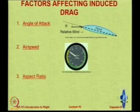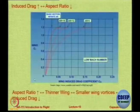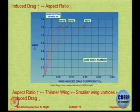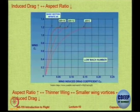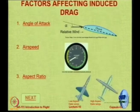Let us look at some other effects. Aspect ratio itself — we have already seen that as the aspect ratio is increased, the slope of the lift curve, C_L versus the wing induced coefficient, is reducing. So when you make a larger aspect ratio wing, you have a thinner or more slender wing. The wing vortices are weaker because you are going further and further away, so the induced drag comes down. These are some of the ways in which you can address the induced drag.